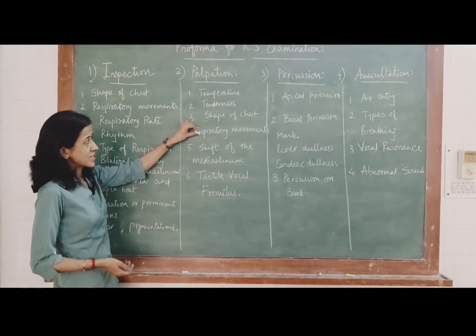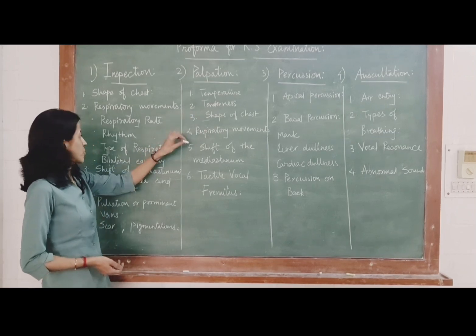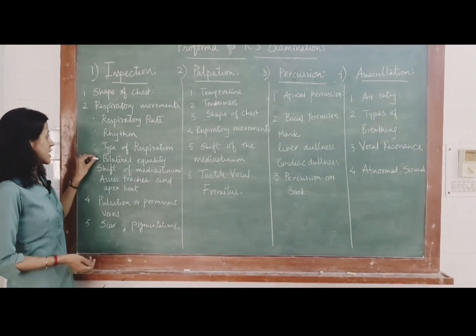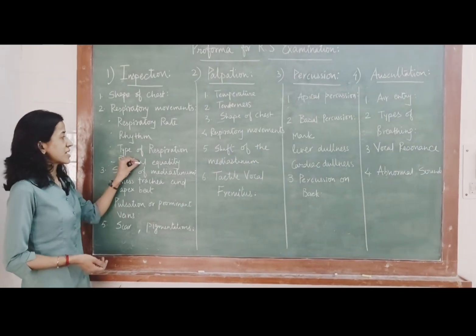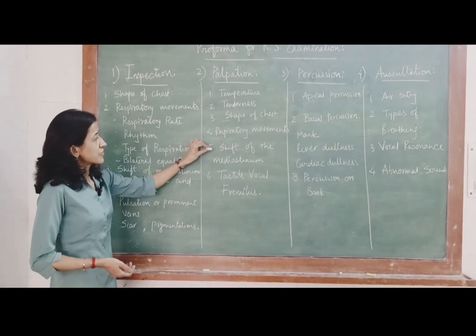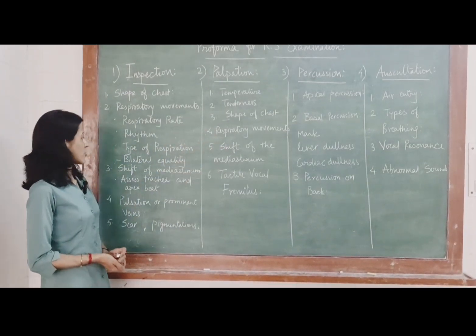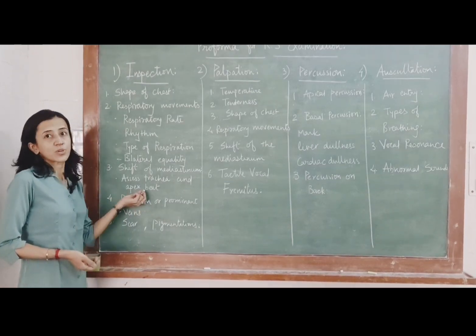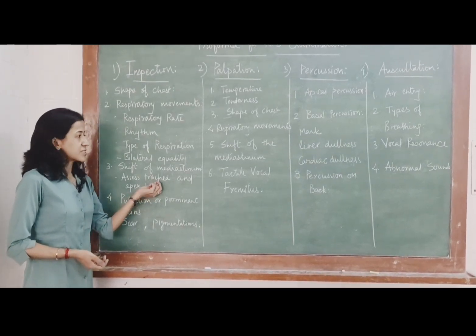Respiratory movements - again, abdominothoracic, thoracoabdominal, as well as you have to palpate for bilateral equality of movement in all the regions of the chest. Fifth one, shift of mediastinum. Again, for that you can palpate apex beat, you can palpate trachea that is tracheal sign.